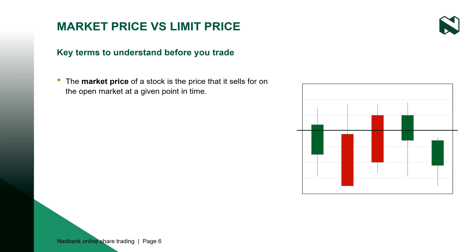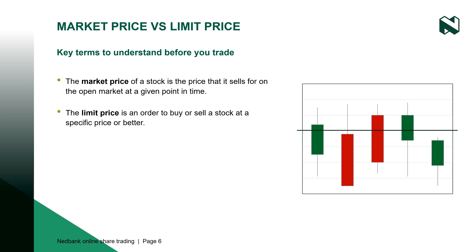Secondly, let's look at the bid price versus the offer price. When trading, a bid price is the highest price a buyer is willing to pay for a single share of a given stock. The offer price, or ask price, on the other hand, is the lowest price a seller is willing to accept for a single share of the stock.